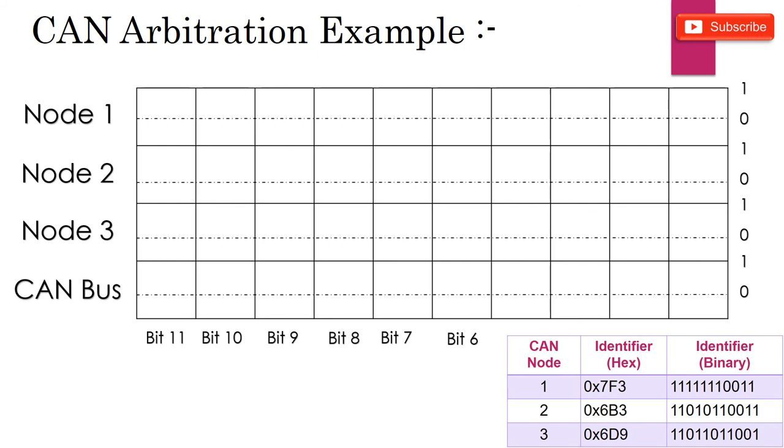All three nodes will start transmitting with their most significant bit, the 11th bit. As all three have 11th bit recessive, the bus state will remain recessive. Even 10th bit of all the nodes are recessive. So there will not be any problem here.